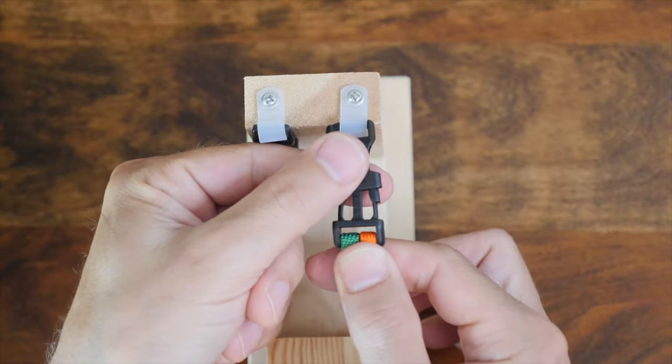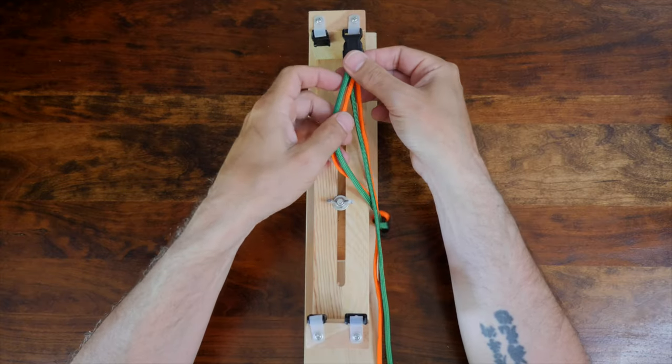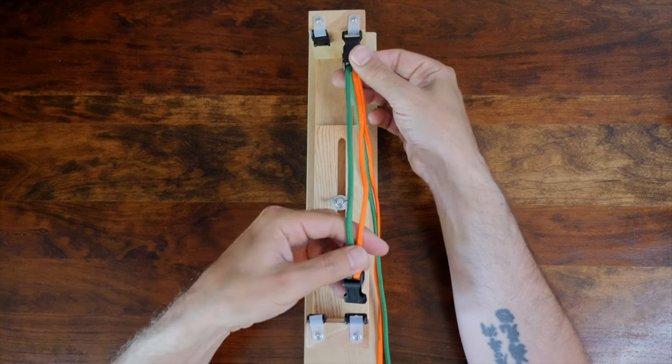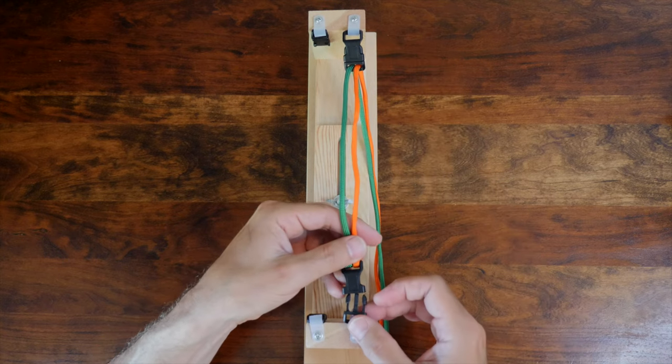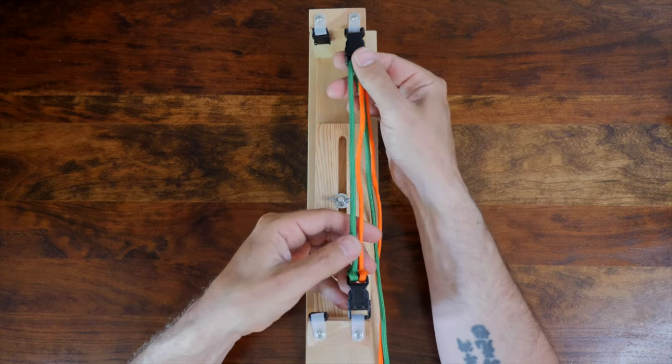For this video, I'll be using a bracelet jig that will keep my hands out of the way and enable you to see clearly what I'm doing. You definitely don't need one of these jigs, and the bracelet can easily be tied freehand, but if you'd like one, I'll also have a link where you can find one in the description.